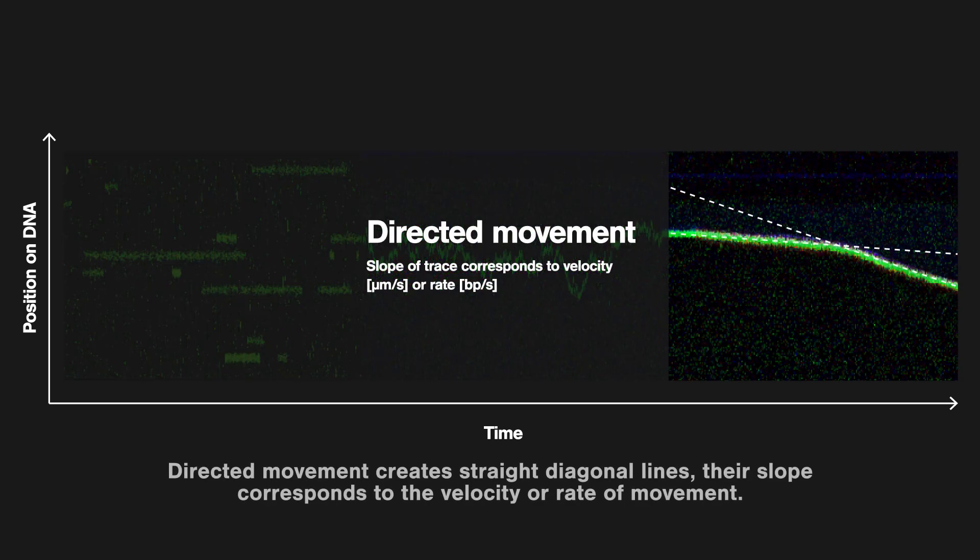Directed movement creates straight diagonal lines. Their slope corresponds to the velocity or rate of movement.